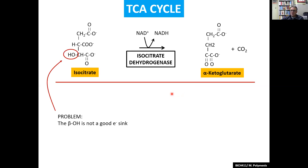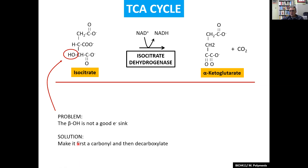Here it's a little different — we'll see a different strategy. The way to stabilize it will be to have a keto group, a carbonyl, right next to the one that's going to leave. But we don't have it on isocitrate. Instead, we have a hydroxy group. This hydroxy group is not a good electron sink, so to make it a good sink, we first have to make it a carbonyl group, and then we can decarboxylate. We're going to put a carbonyl group right next to the CO2 that's going to leave.